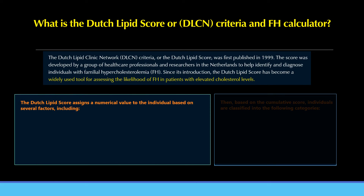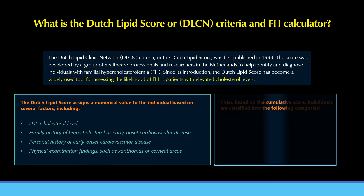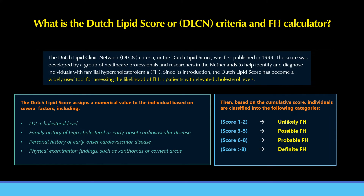The Dutch Lipid Score assigns a numerical value based on several factors: LDL cholesterol level, family history of high cholesterol or early-onset cardiovascular disease, personal history of early-onset cardiovascular disease, and physical examination findings such as xanthomas or corneal arcus. Based on the cumulative score, individuals are classified as: Score 1–2: unlikely FH; Score 3–5: possible FH; Score 6–8: probable FH; Score above 8: definite FH.